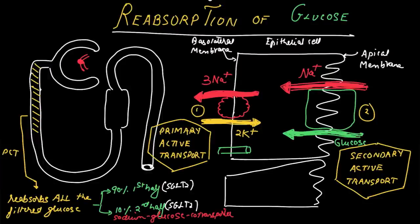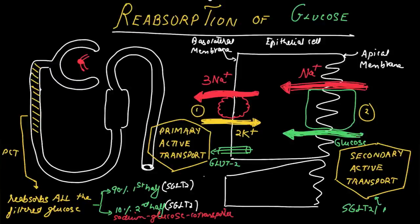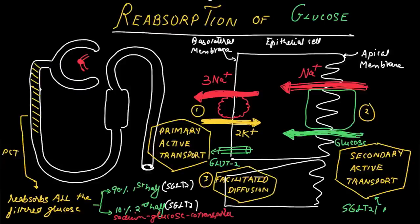The glucose transporters used are SGLT2 in the first half and SGLT1 in the second half of the proximal tubule. SGLT2 is inhibited by gliflozins, a class of drugs used in the treatment of insulin-resistant type 2 diabetes mellitus.